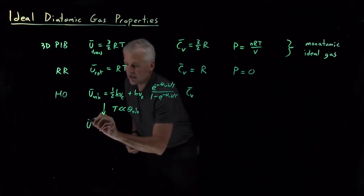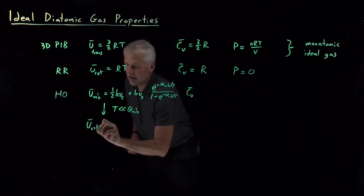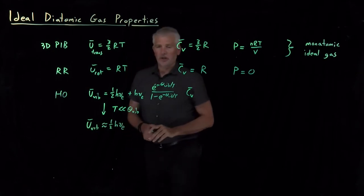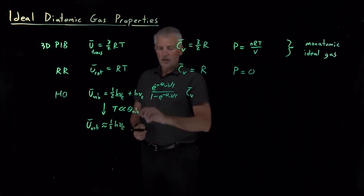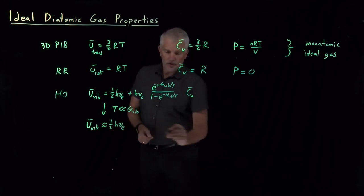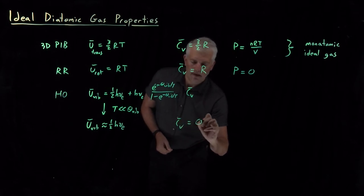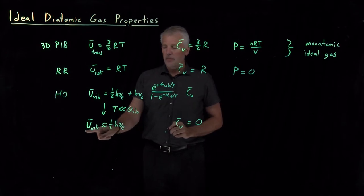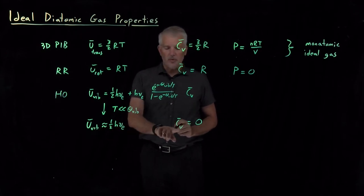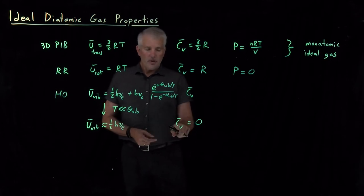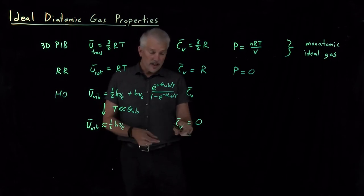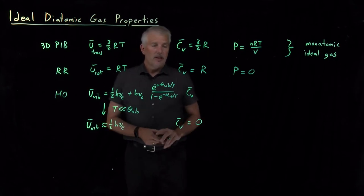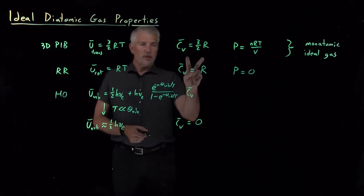And we can, under those conditions, say that the vibrational internal energy is pretty close to the zero point energy, just the minimum amount of energy without much extra energy above that. And under those conditions, the temperature derivative of this term, these are just constants, there's no temperatures in there at all. So the temperature derivative of that internal energy just works out to be zero. So the heat capacity due to vibrations is either zero or quite small, which is different than the result for rotations or for vibrations.